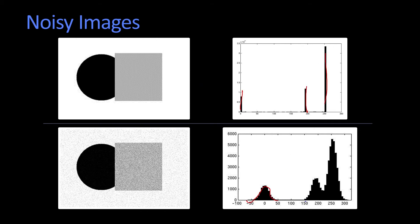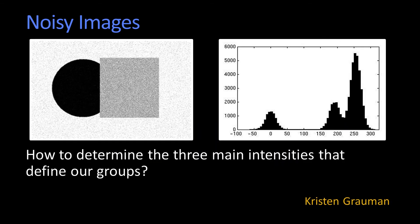But we get these distributions of intensity. So the question of how do we break things up? How do we carve this histogram into these different groups?